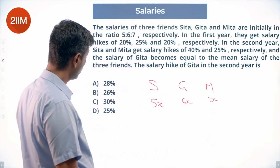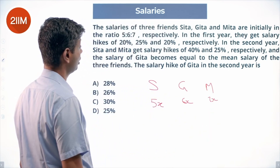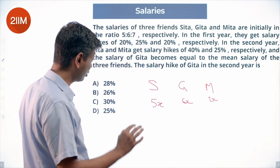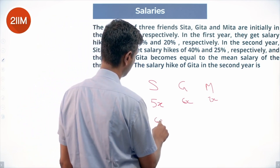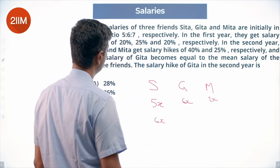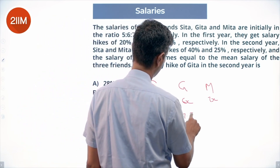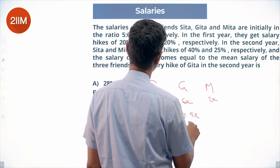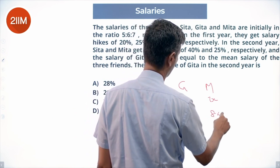In the first year they got salary hikes of 20%, 25%, and 20% respectively. The 20% hike takes Sita's salary to 6x, the 25% hike takes Geeta's to 7.5x, and the 20% hike takes Meeta's to 8.4x.